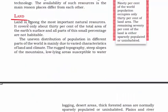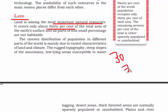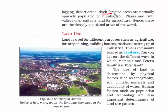The first thing we'll read about is land. It is the most important natural resource. It covers about 30% of the total area of earth's surface — remember, 30% is land and 70% is water. The land distribution throughout the world is uneven, meaning not every place is the same. We have mountains, plains, plateaus, fold mountains, and forest areas.